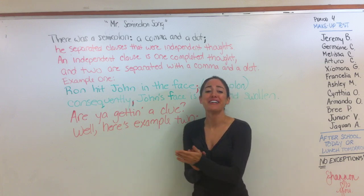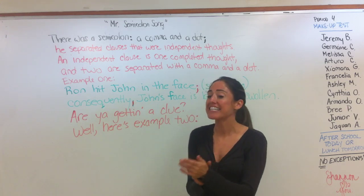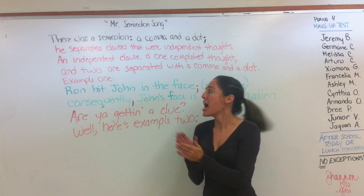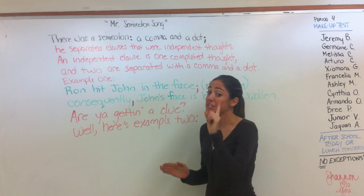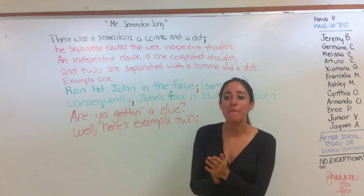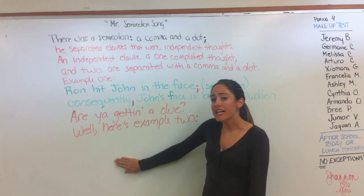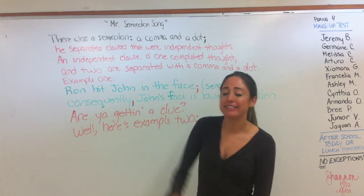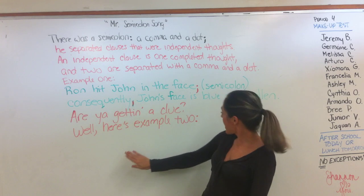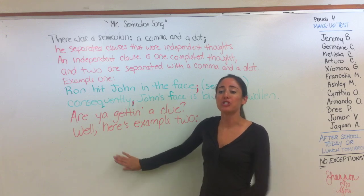From the top — third time, you better be singing. There was a semi-colon, a comma and a dot. He separated clauses that were independent thoughts. An independent clause is one completed thought, and two are separated with a comma and a dot. Example one: Ron hit John in the face — semi-colon — consequently, John's face is blue and swollen. Are you getting a clue? Well, here's example two.